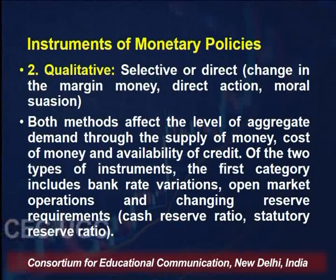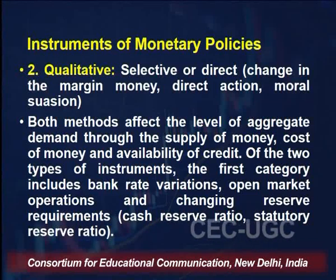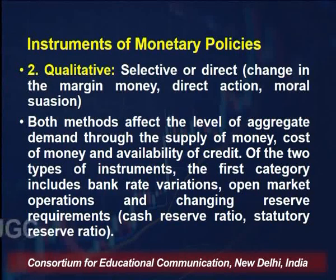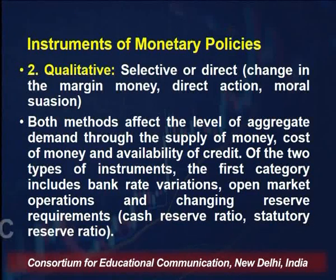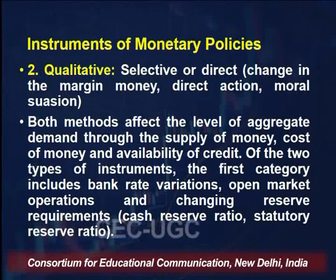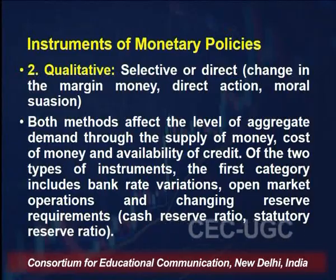Both methods affect the level of aggregate demand through the supply of money, cost of money, and availability of credit. Of the two types of instruments, the quantitative category includes bank rate, open market operations, and changing reserve requirements such as CRR and SLR. If we discuss these in detail, the first is bank rate policy — what is the bank rate?